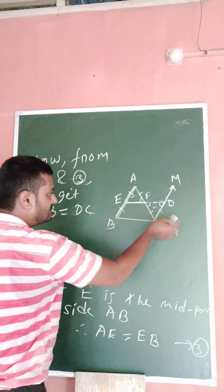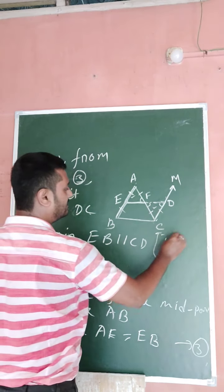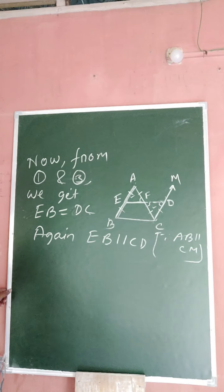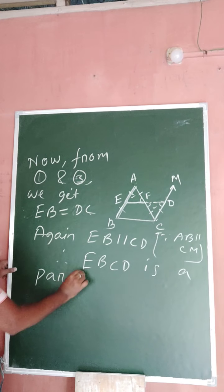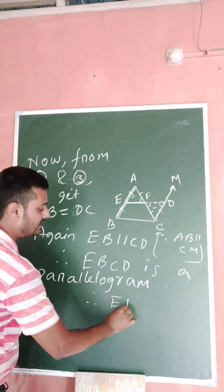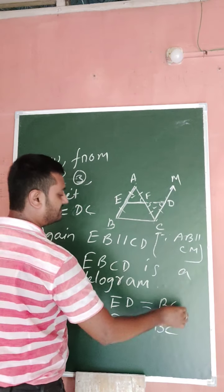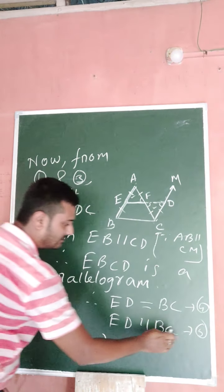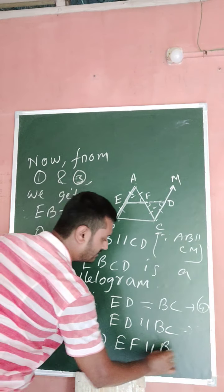In a quadrilateral EBDC, if the opposite sides are equal and parallel, then it must be a parallelogram. Since EB equals CD and AE is parallel to CD by construction, EBDC is a parallelogram. Therefore ED equals BC and ED is parallel to BC. Since ED is parallel to BC, it follows that EF is parallel to BC.